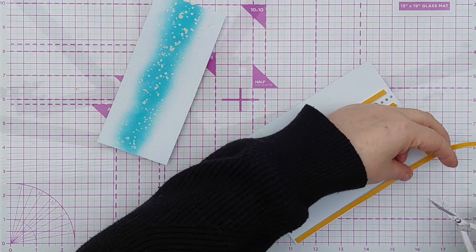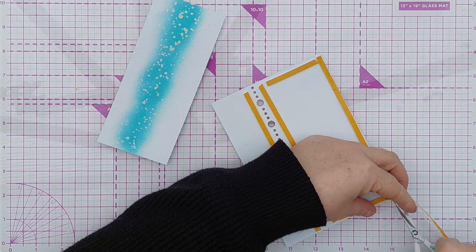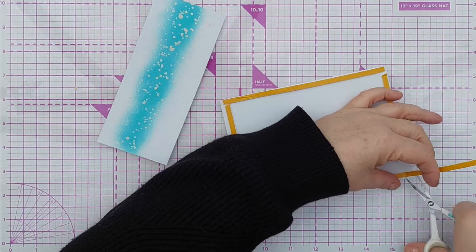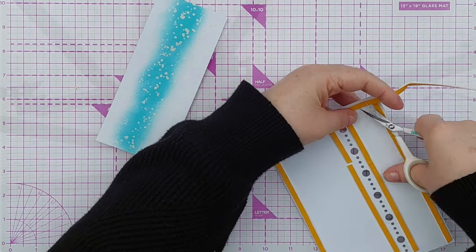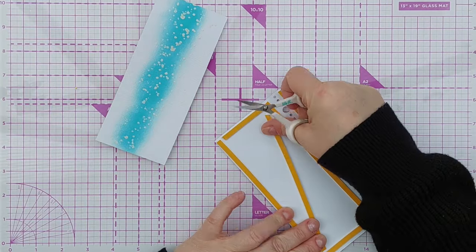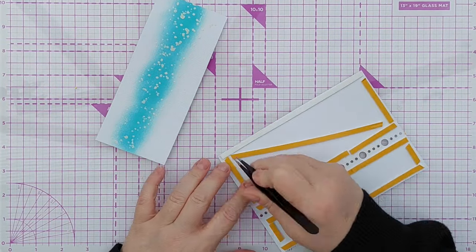When I add a bit of mixed media behind an aperture panel I do like to add some foam tape in between. I just like that little bit of separation, the little bit of depth and dimension that having that gap there adds to the card.